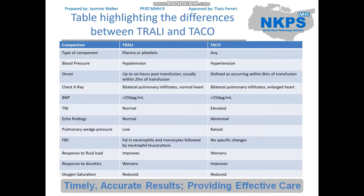I've put a comparison in a table, combining information from a couple of different sources. The first column is the type of component: in TRALI you'd expect it to be plasma or platelets as those are the ones that carry the antibodies, whereas with TACO you can have a reaction with red blood cells, although plasma is often involved too. Blood pressure: in TRALI it's hypotension, whereas in TACO it's hypertension. Onset: TRALI usually happens within two hours of transfusion, although it can be up to six hours, whereas TACO is just defined as occurring within six hours. So if it's happening faster, there's more chance it's TRALI.